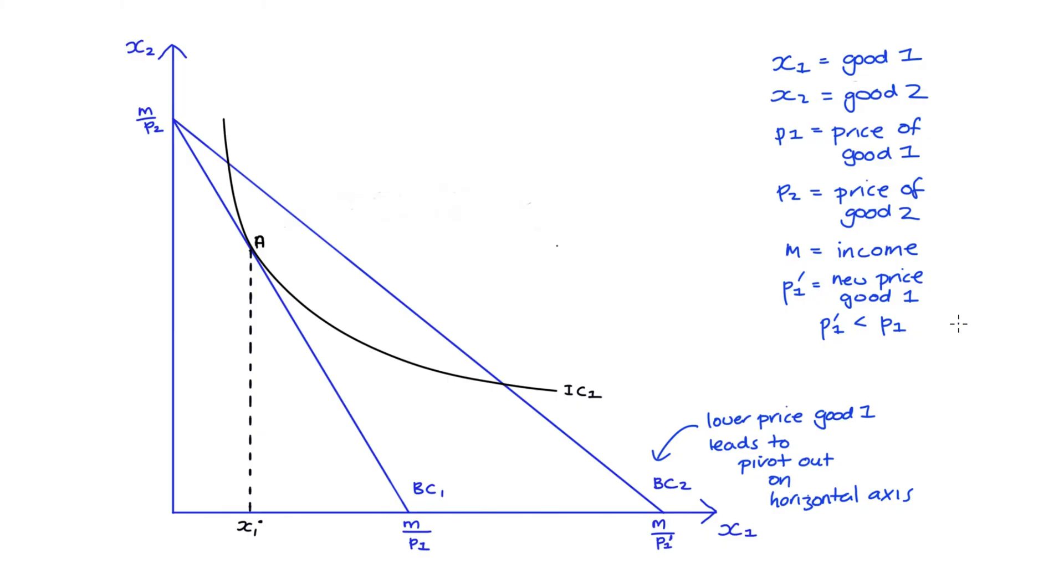As a result of the change in price we have a new optimal bundle which I'll call bundle B. And at bundle B we're consuming x1 star star level of good one. What I'm interested in here is thinking about this total change in the consumption of good one which is equal to this length here. And what I'm going to do is think about this total change as being itself composed of two parts.